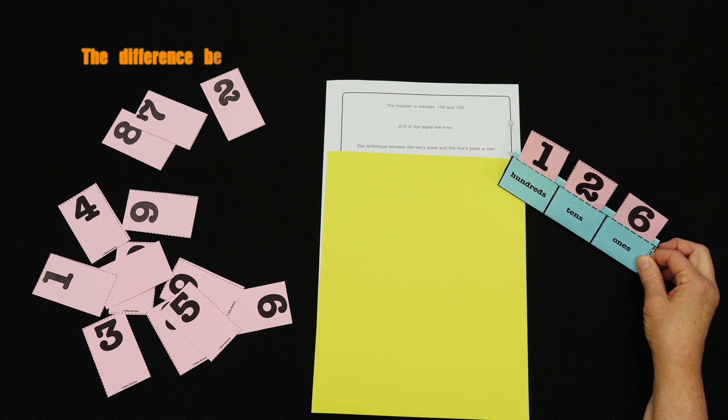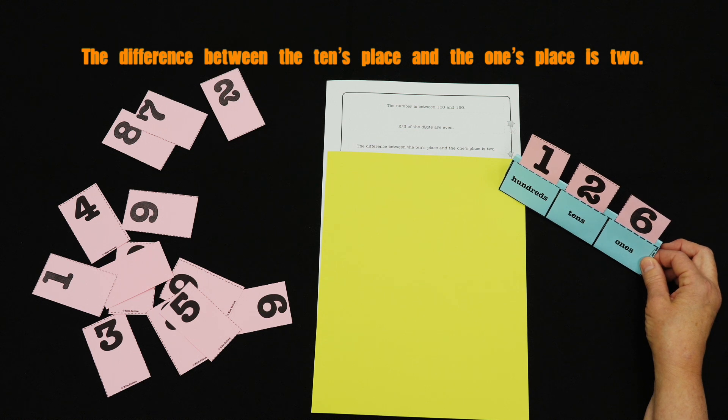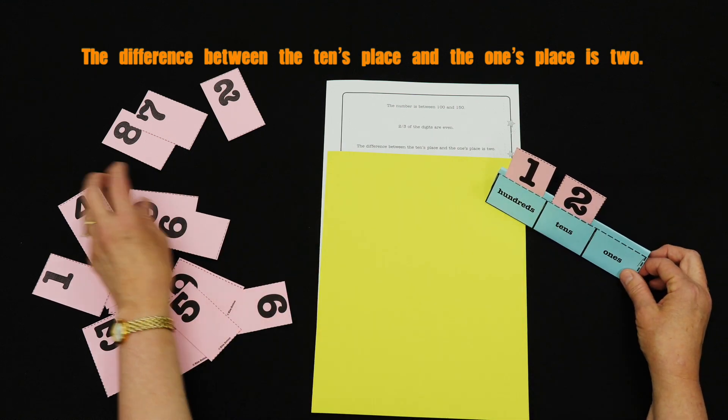Next clue is given: difference between the tens place and the ones place is two. Wow, I look at tens and ones, I see a difference of four. I've got to make a change. I think I'll change this.